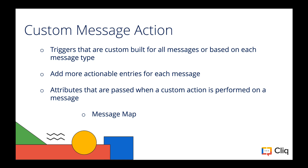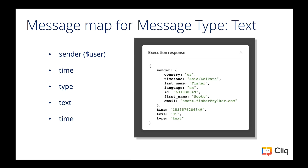When an action is performed on a message, the attributes that are passed are the message map. Generally, the message map will contain details about the message such as the message type, the sender details, and the time of message. But the structure of this map varies a little bit corresponding to the type of message. For messages of the type text, the message map will contain the following attributes: sender details (the user map), the time of message, the type of message, and the text key which will contain the actual message string for which the action was triggered.